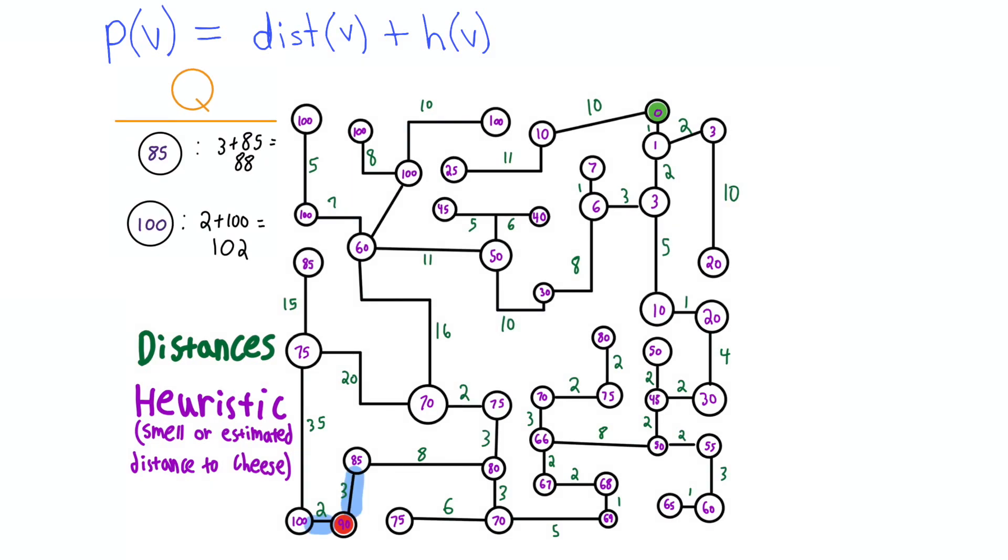Taking a look at the queue, we see that the node with a purple heuristic of 85 has the lowest priority value. The priority of 88 means that the estimated distance from the start node through this node to the cheese is 88. Since this is the lowest priority on the queue, we take the path along this node. So we pop it off and add its children.